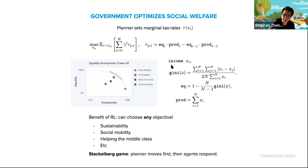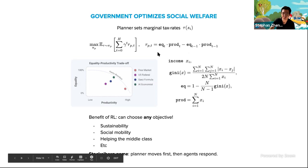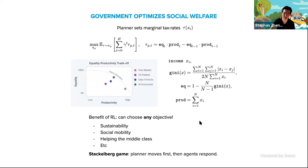If we take all the post-tax incomes X, we can compute the Gini coefficient — a normalized sum of absolute differences between the incomes of all agents. Equality is then one minus the Gini with some normalization. Productivity is just the sum of all the incomes. The benefit of RL is that this objective is completely flexible — you can have sustainability, social mobility, helping the middle class — anything you can quantify and put into a reward function can be given to this government or social planner as an optimization objective.